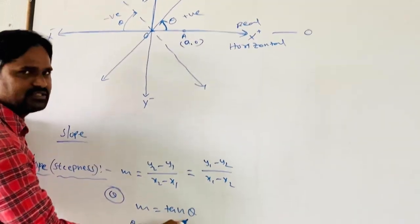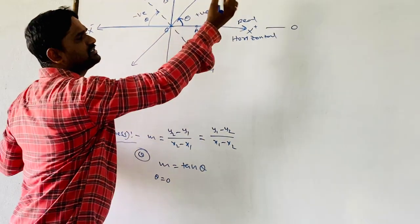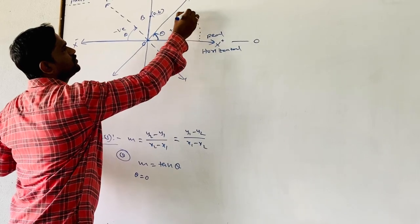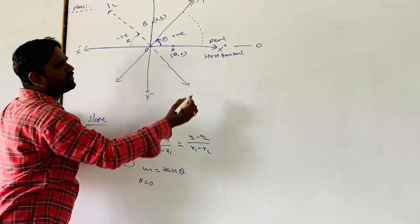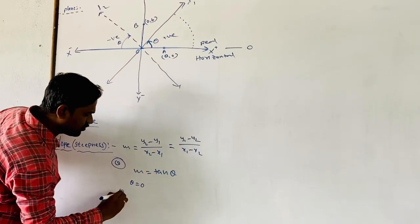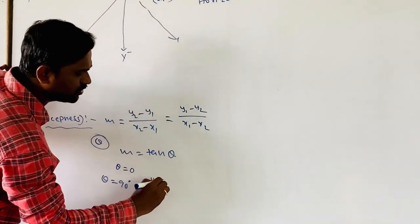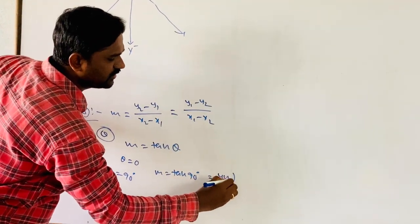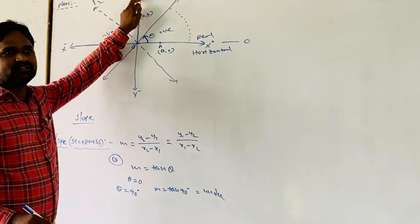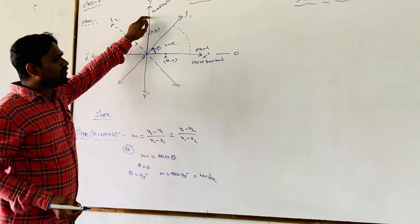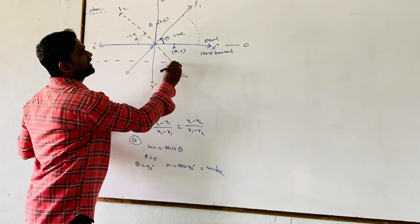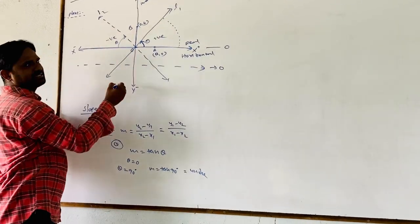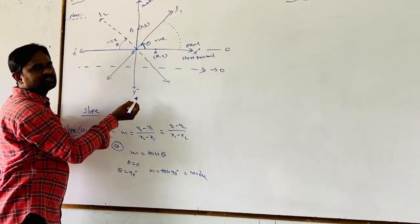As the theta value increases, the value of m also increases. If theta is positive and increases from 0, m increases from 0 to infinity. If theta equals 90°, then m = tan(90°), which is undefined — so the slope of the y-axis is undefined. A line parallel to the x-axis has slope 0, and a line parallel to the y-axis has slope infinity.